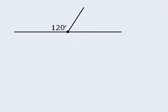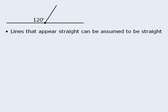Perhaps there's a very slight bend in this line and this angle is actually 179.99 degrees. If that's the case, then the conclusion that the missing angle here is 60 degrees is incorrect. Now fortunately on the GRE, all lines that appear to be straight can be assumed to be straight. So we can correctly deduce that the missing angle here is indeed 60 degrees.